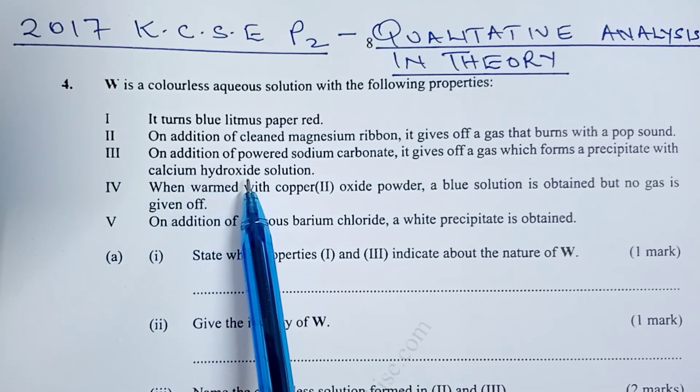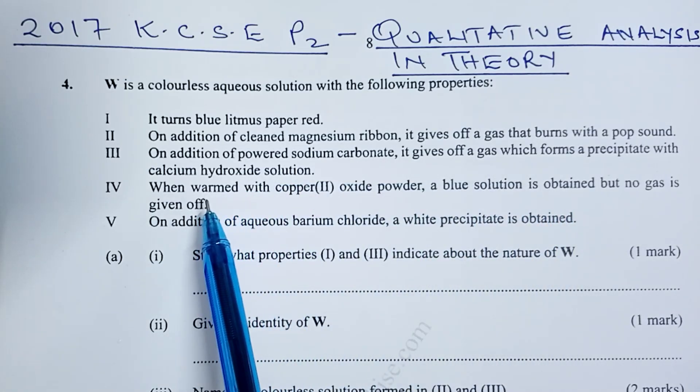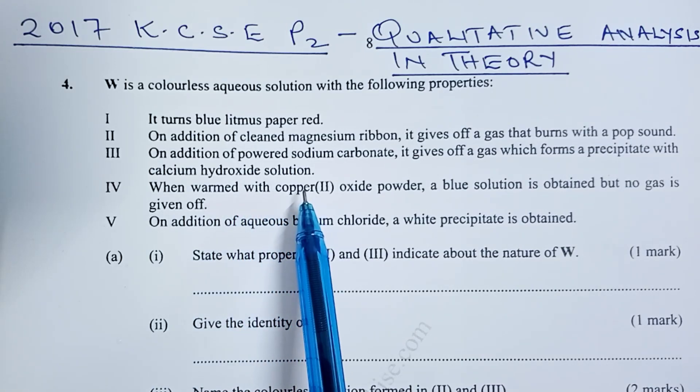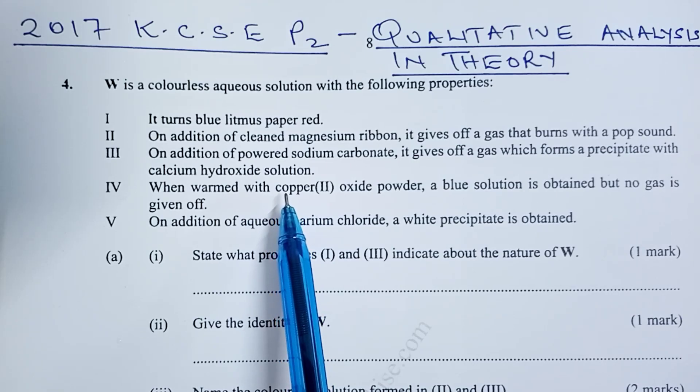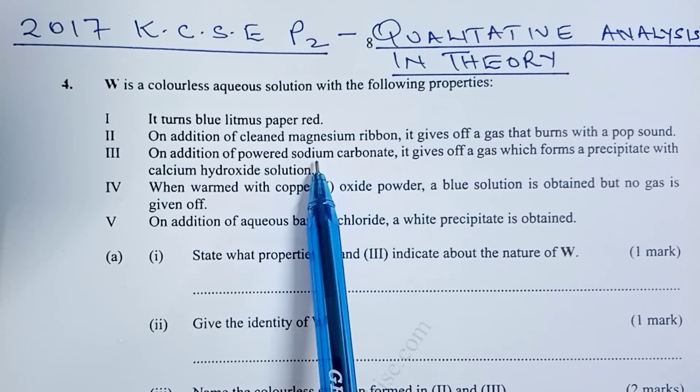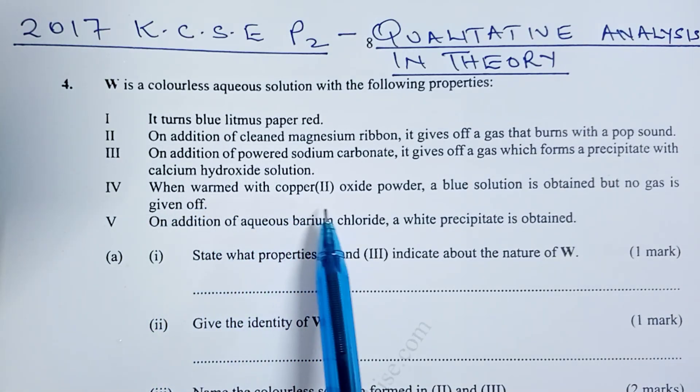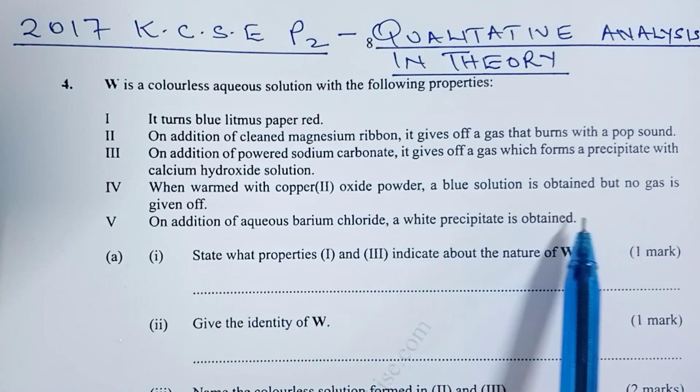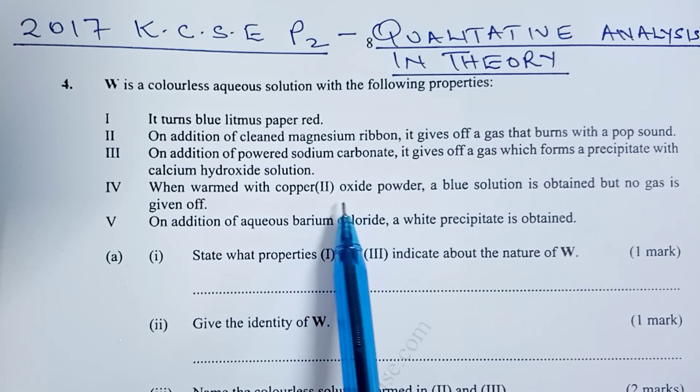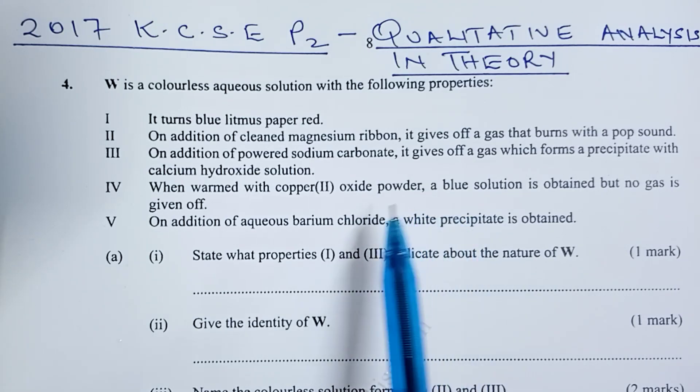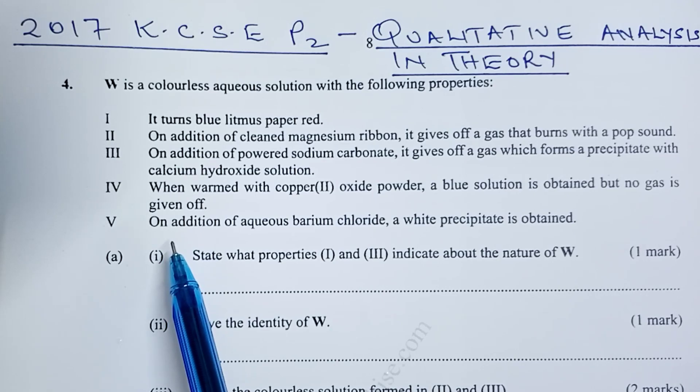Three, on addition of powdered sodium carbonate it gives off a gas which forms a precipitate with calcium hydroxide solution. This gas is obviously carbon dioxide. So point 3 is still confirming that solution W is an acid because it's able to react with sodium carbonate to give us carbon dioxide gas. Point 4, when warmed with copper 2 oxide powder, a blue solution is obtained but no gas is given off. Copper 2 oxide is a base, so we are able to get a salt and water but no gas is given off.